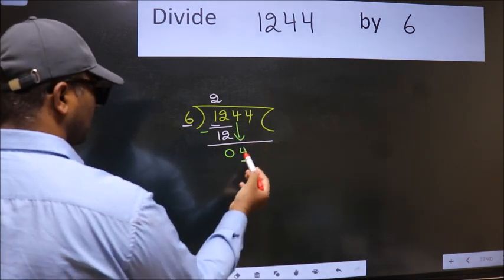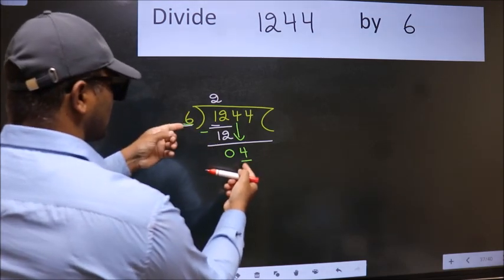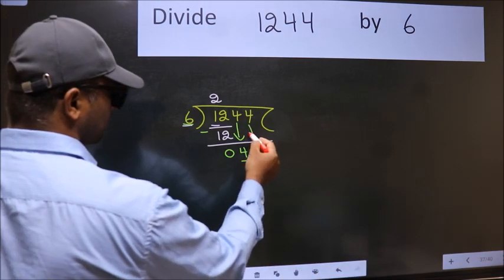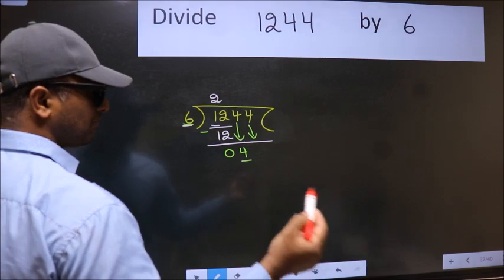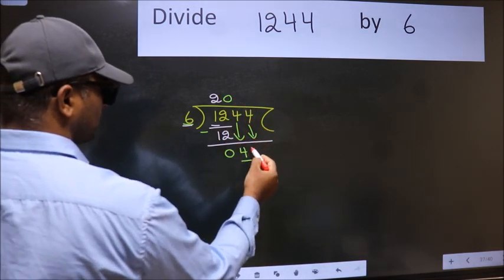Now here we have 4 and here 6. 4 is smaller than 6, so we should bring down the second number. And the rule to bring down second number is put 0 here. Then only we can bring this number down.